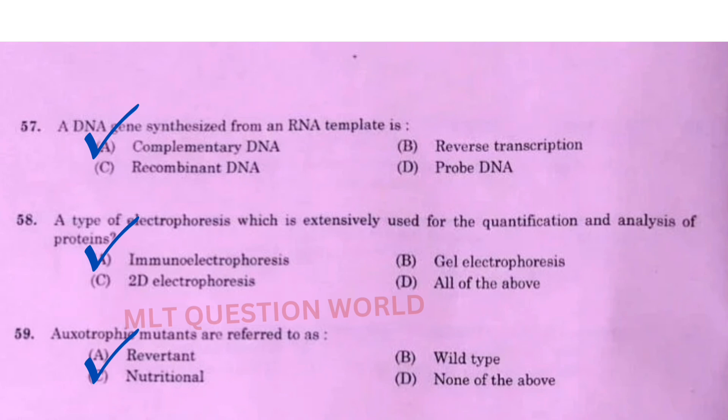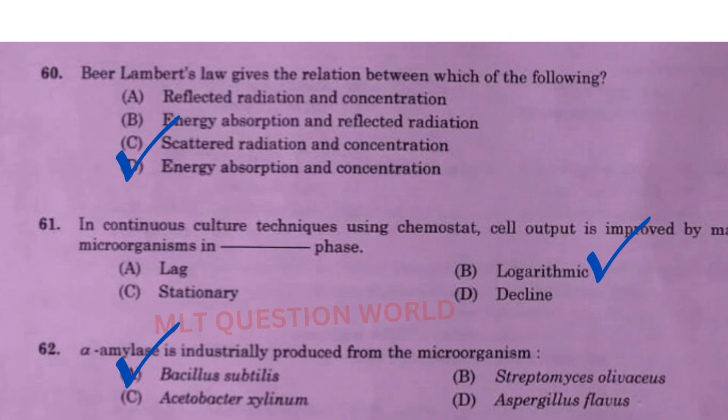Next question: A type of electrophoresis extensively used for the quantification and analysis of proteins — the right answer is option A, immunoelectrophoresis. Next question: Auxotrophic mutants are referred to as option C, nutritional. Next one: Beer-Lambert's law gives the relation between which of the following? The right answer is option D, energy absorption and concentration.